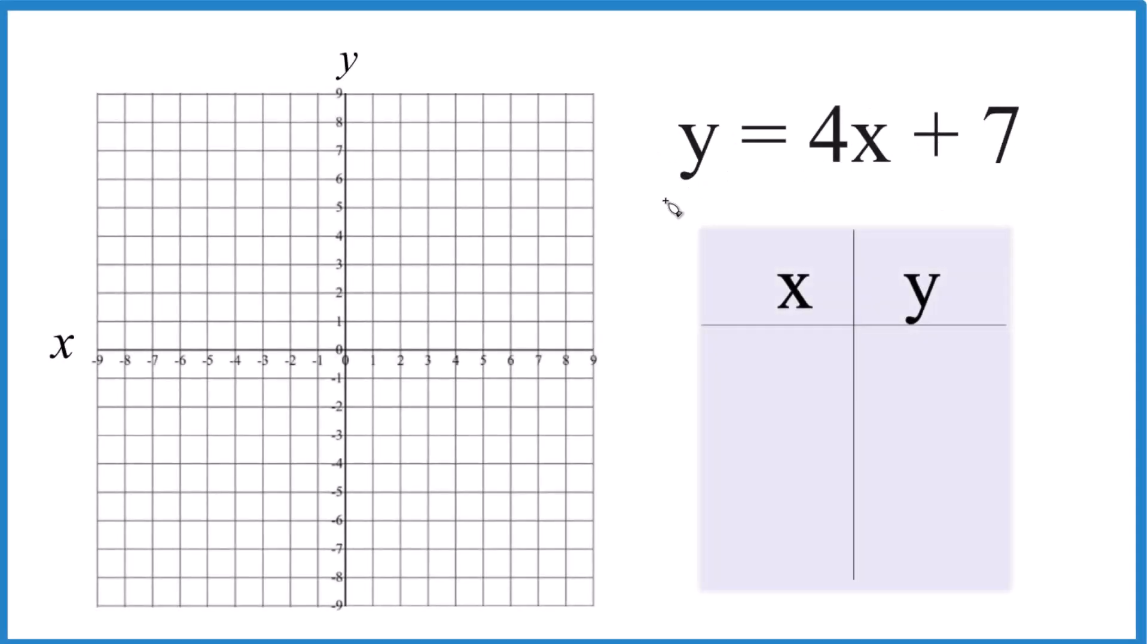So let's graph this linear equation y equals 4x plus 7. We're going to use a table of values to do that. You could also use slope-intercept form, and that would work as well, give you the same graph. If you need help with that, link at the end of the video.